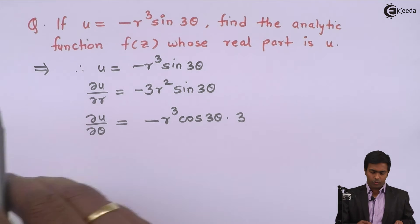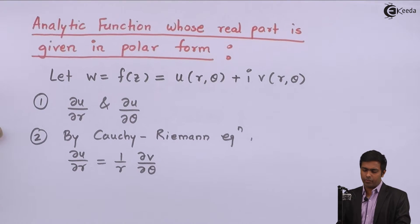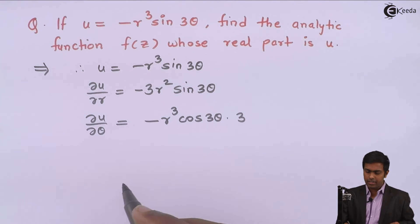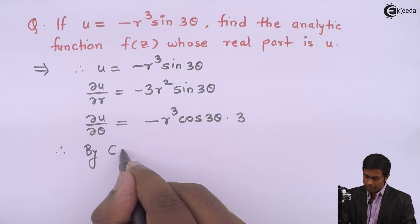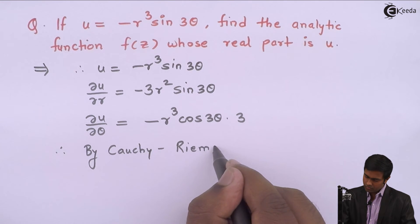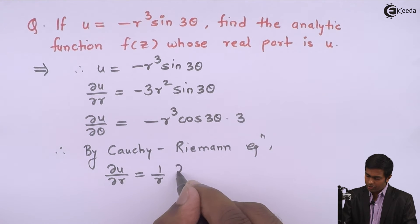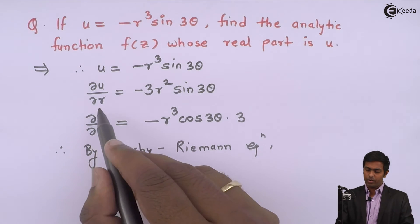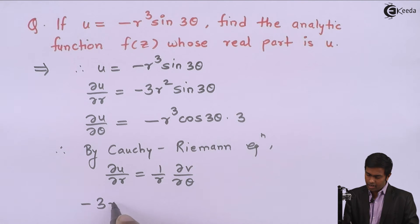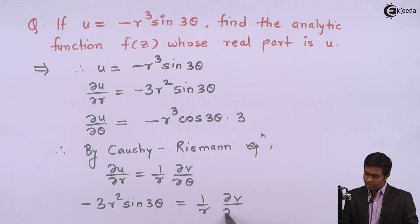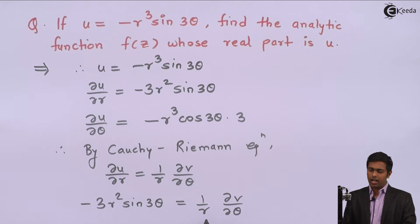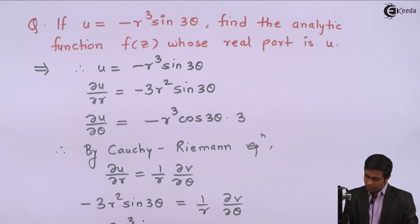Now we are going to use the Cauchy-Riemann equation since F(Z) is analytic. By the Cauchy-Riemann equation, ∂U/∂R equals (1/R) ∂V/∂θ. The value of ∂U/∂R is minus 3R squared sine(3θ), so we write: minus 3R squared sine(3θ) equals (1/R) ∂V/∂θ. Taking R to the left-hand side, we get minus 3R cubed sine(3θ) equals ∂V/∂θ.